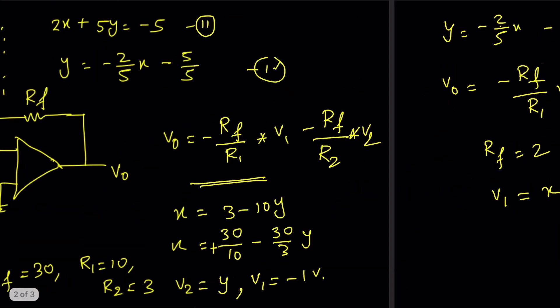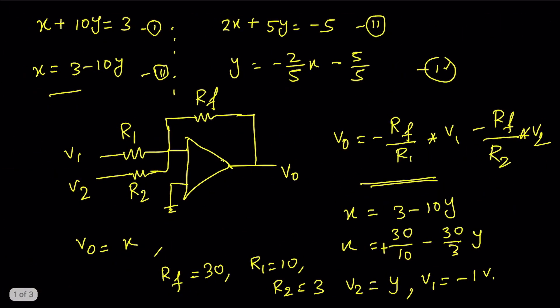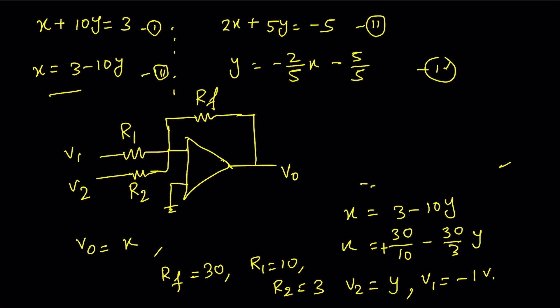Now we draw the second op-amp circuit using the values from equation 3: Rf = 30k, R1 = 10k, R2 = 3k, V2 = y, and V1 = -1. Then V0 will be x. So we already have two circuits.